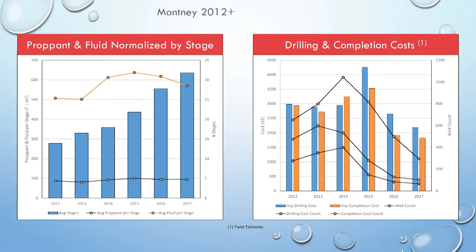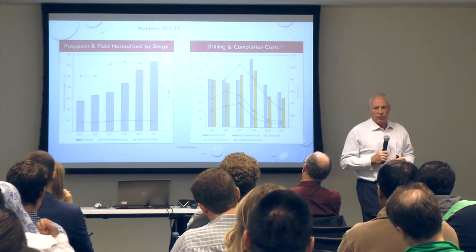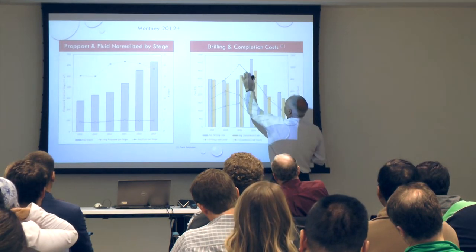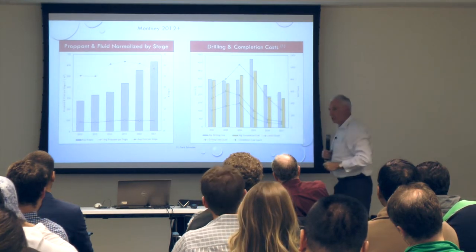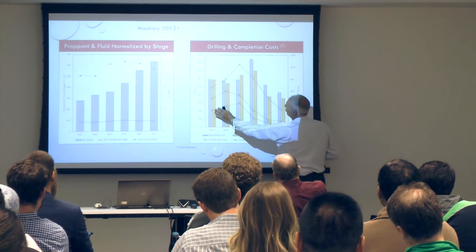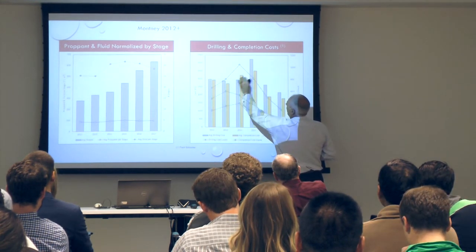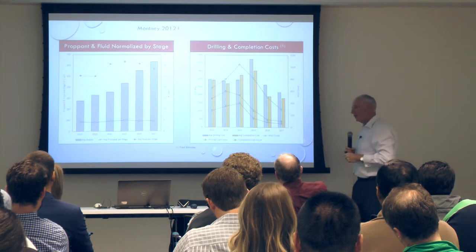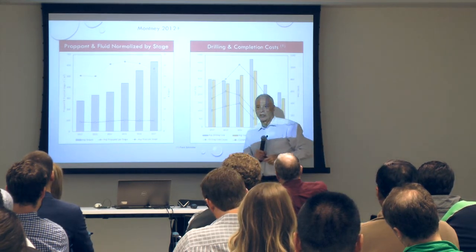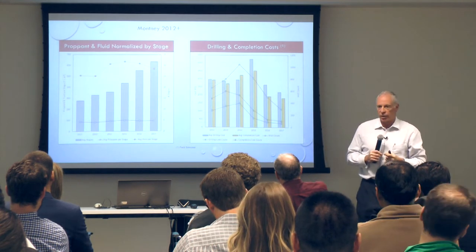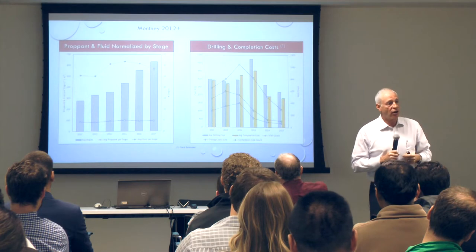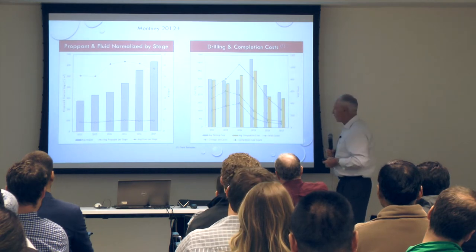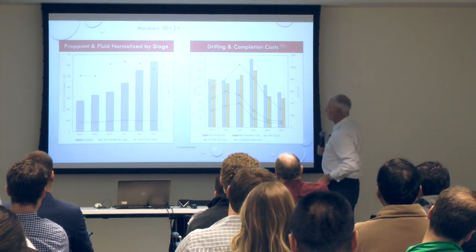Looking at costs: average drilling cost in the Montney was going up but has now been coming down. Average completion cost is also coming down significantly in the last two and a half to three years — probably because activity levels are lower and there's less work for service companies. But we're also putting in more fracks, more fluid, and more activity, so the cost per unit is coming down even as the total work intensity increases.